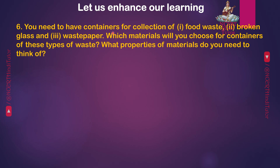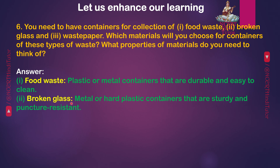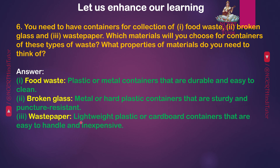Q5 continued: You need to have containers for collection of: 1. Food waste, 2. Broken glass, and 3. Waste paper. Which materials will you choose for containers of these types of waste? What properties of materials do you need to think of? Answer: 1. Food waste — plastic or metal containers that are durable and easy to clean. 2. Broken glass — metal or hard plastic containers that are sturdy and puncture resistant. 3. Waste paper — lightweight plastic or cardboard containers that are easy to handle and inexpensive.